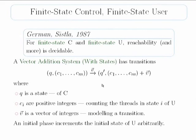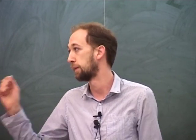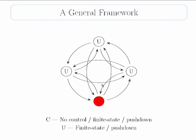This is a result by Gemm and Sisler in 1987. They say: for a finite state system C and a finite state system U, put C the controller in parallel with any number of U's — and we have decidability. This result uses Petronets. Because U is finite state, a Petronet can be thought of as a vector addition system with counters — one counter for each state of the system counting how many processes are in that state. Moving a process from state one to state two just decrements the first counter and increments the second. Using Petronet reachability, we get a decidable system. So things are looking good. How can we start to generalize this? I'm interested in pushdown systems. We can start to think about this network with confused communication — a controller process and some user processes — and ask what happens if we let some of these be pushdown systems.